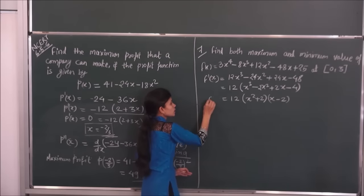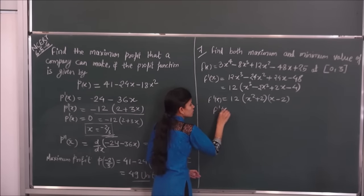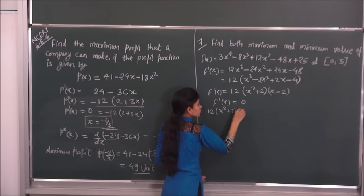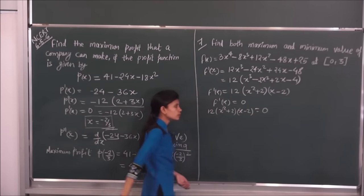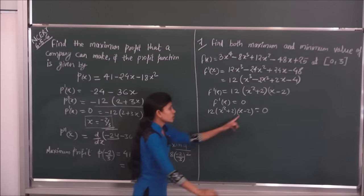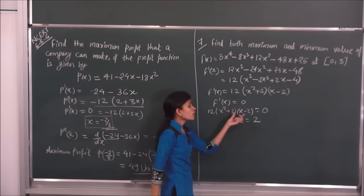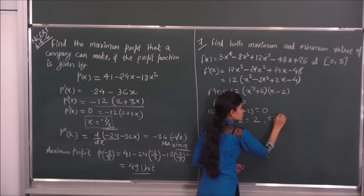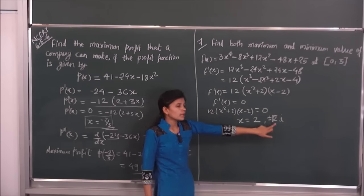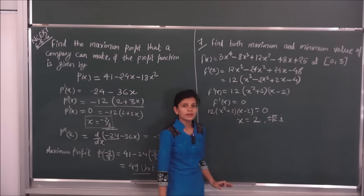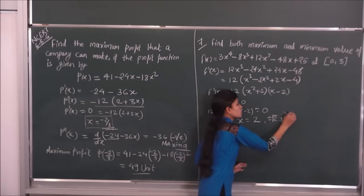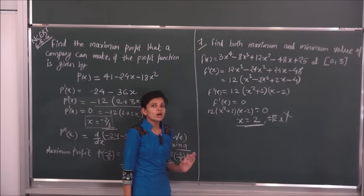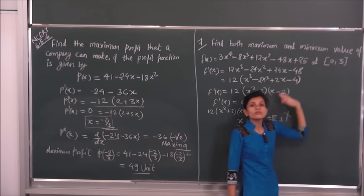f'(x) को 0 से equate करते हैं: 12(x-2)(x² + 2) = 0। यहाँ से x = 2 मिलता है, और x² + 2 = 0 से x = ±√(-2)i मिलता है जो imaginary है। Imaginary values को consider नहीं कर सकते, तो केवल एक critical point x = 2 मिल रहा है। Interval [0, 3] given है तो तीनों values 0, 2, 3 पर function check करते हैं।